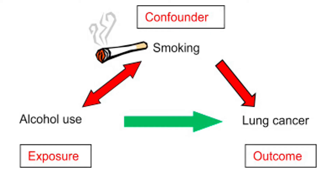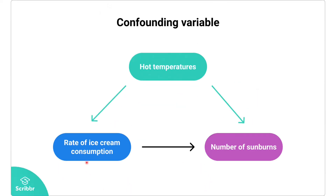For something to be a confounder, it has to be associated with both the exposure and the outcome. Smoking is associated with alcohol use, and at the same time it's a true risk factor for lung cancer — the outcome. Another example would be thinking that ice cream consumption leads to more sunburns. But that's a false association — people who consume a lot of ice cream are more likely to do so in hot temperatures at the beach, and it's the hot temperature that leads to sunburns. So hot temperature is associated with both the exposure (ice cream consumption) and the outcome (sunburns).